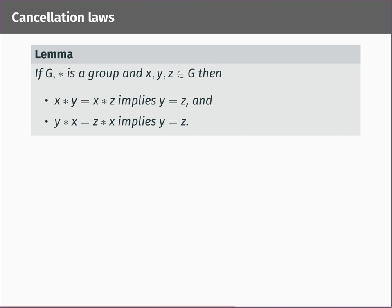Let's now look at the cancellation laws in a group. If G is a group with binary operation star and x, y, z are elements of G, then if x star y equals x star z, it must be that y equals z — that's the left cancellation law. The right cancellation law says if y star x equals z star x, then y equals z. You can see why: what it allows you to do is cancel the x and deduce that y must equal z. The reason is you can multiply on the left by x-inverse or on the right by x-inverse to get rid of that x.